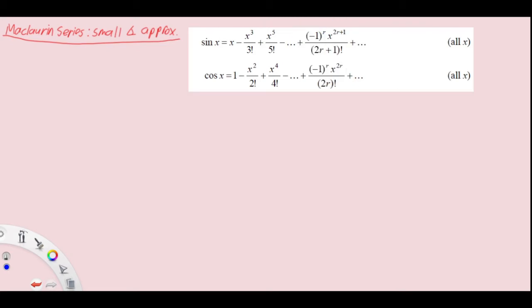So as you can see, we have sine fx equals to fx minus fx cubed over 3 factorial plus fx power 5 over 5 factorial, and cosine fx being 1 minus fx squared over 2 plus fx power 4 over 4 factorial.